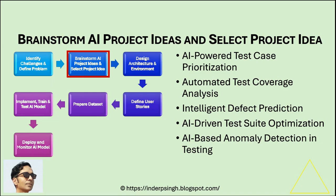Intelligent defect prediction: an AI model to predict potential defects in software based on historical defect data, code complexity, and recent changes. Additional ideas include AI-driven test suite optimization and AI-based anomaly detection and testing. Each of these machine learning project ideas addresses a specific challenge in software testing, making them valuable projects for your resume. Select the most feasible and impactful AI project idea.